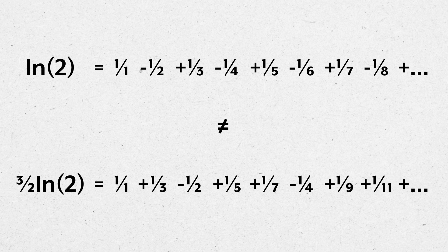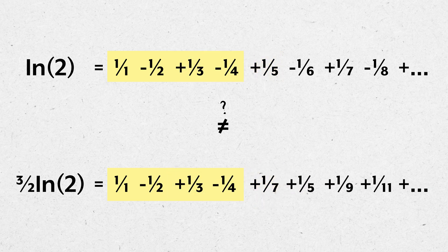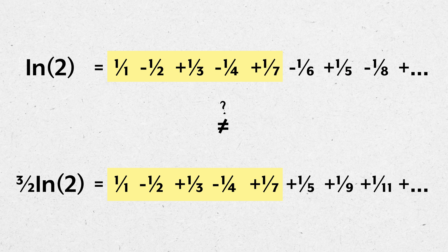But if we only use partial sums to determine the sum of those infinite series, we never actually add infinitely many terms. So what if we only ever rearranged the terms needed to make the partial sums equal? Let me know your thoughts in the comments, and thanks for watching.